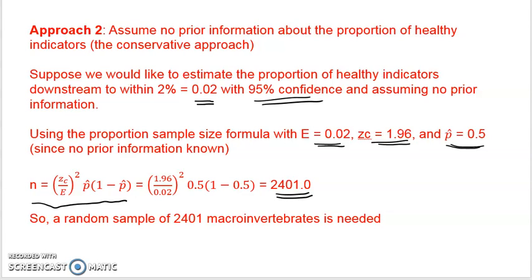And that actually comes out to be a whole number, 2401. So a random sample of 2,401 macroinvertebrates is needed in order to estimate the proportion of healthy indicators to within 2%.